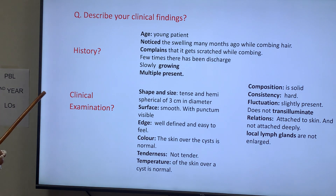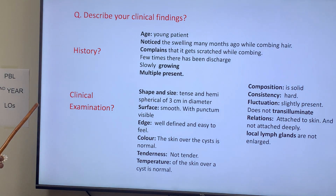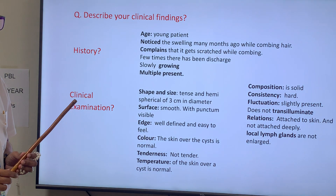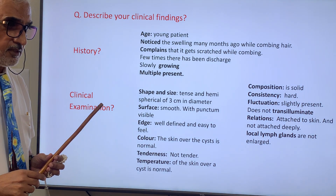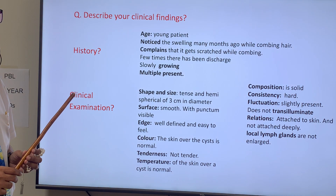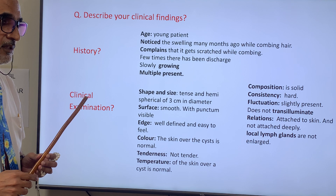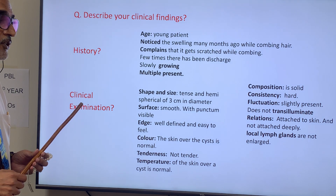On examination, the swelling is tense and hemispherical with a diameter of roughly three centimeters. The surface is smooth and a punctum is visible. The edge is well defined and easy to feel. The color of the skin is the same as elsewhere, it is non-tender, and the temperature of the skin is also the same. The consistency is hard, though fluctuation is difficult to elicit, but I can feel that it is fluctuating. It is not transilluminant. It is attached to the skin but not attached to the underlying muscles, and the local lymph nodes are not enlarged.